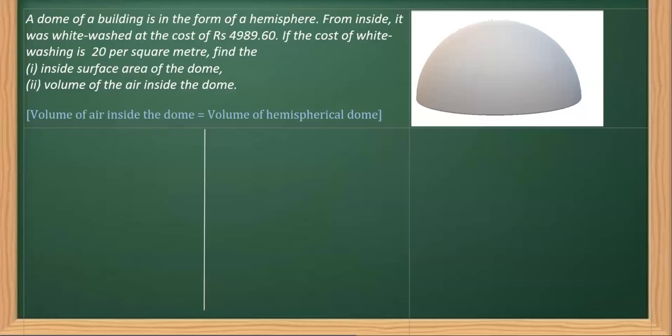This question is taken from NCERT. A dome of a building is in the form of a hemisphere. It's a hemispherical dome that looks like this. Further, it says that from inside it is whitewashed.